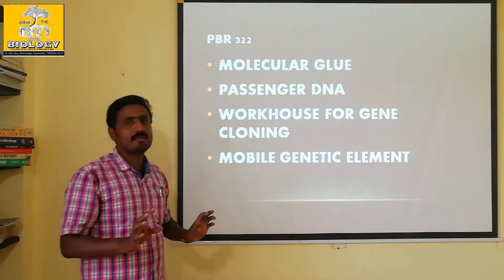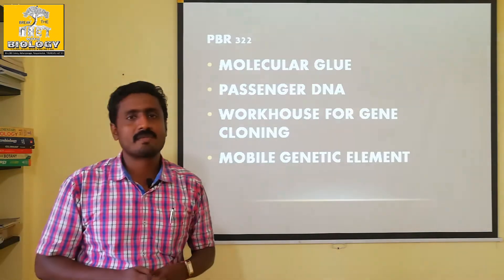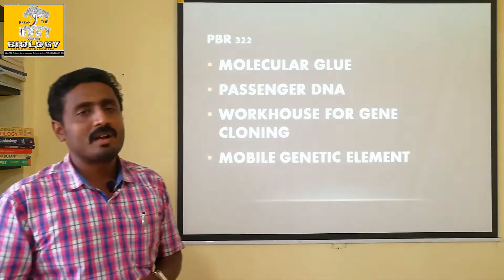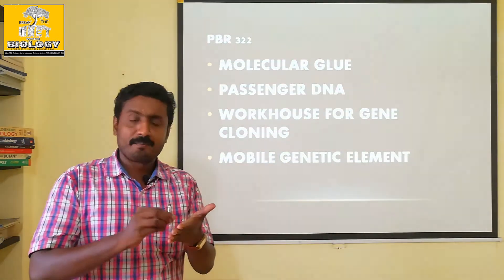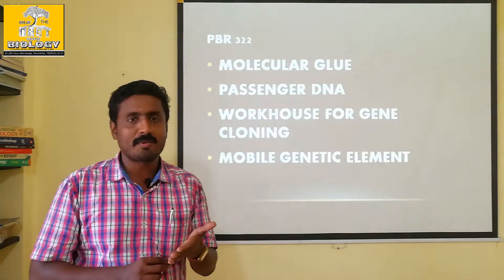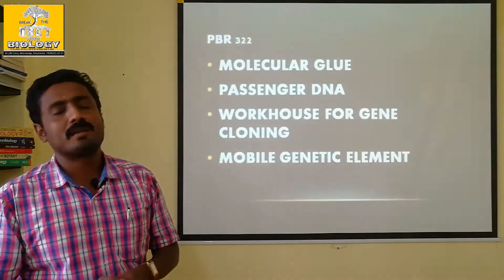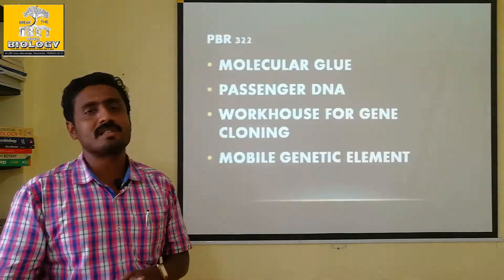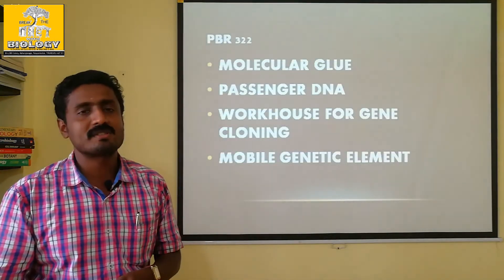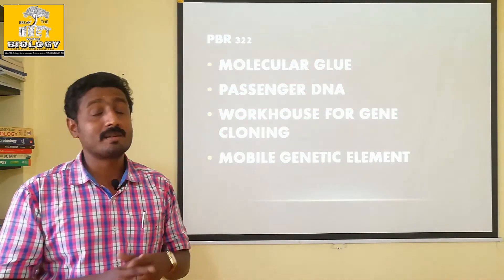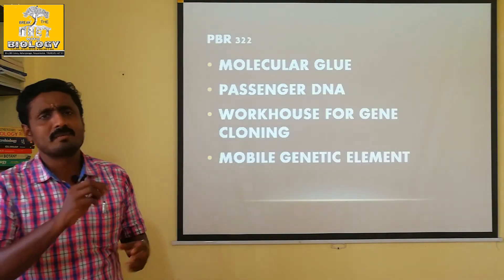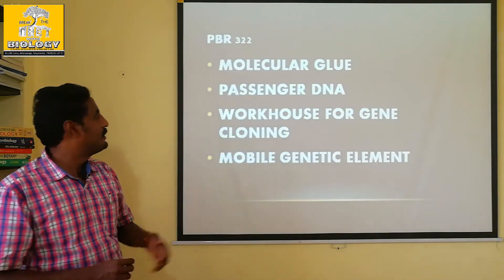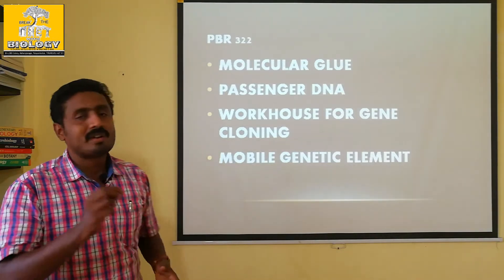First, passenger DNA — you have to know that the passenger DNA is the key concept. This is about the work of gene cloning. With PBR322, what can we do? Recombination — you can bind DNA. What DNA can we bind? Insulin, streptomycin-producing gene, various antibiotic-resistant or antibiotic-production genes. So, what type of gene can you bind to PBR322?